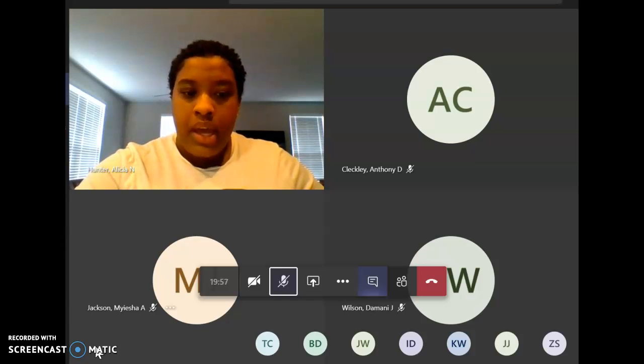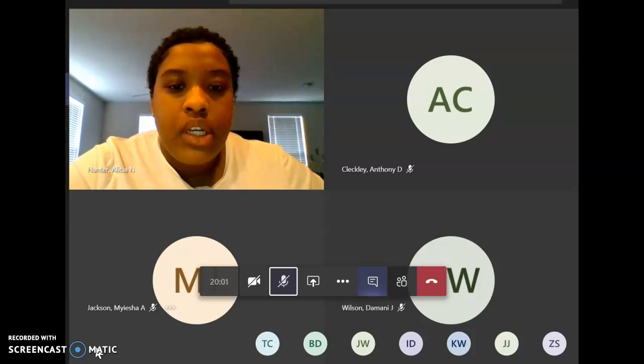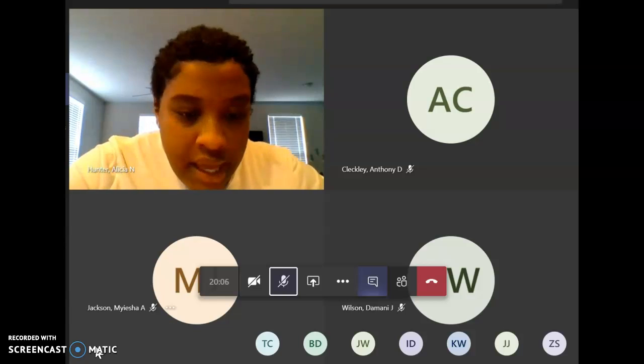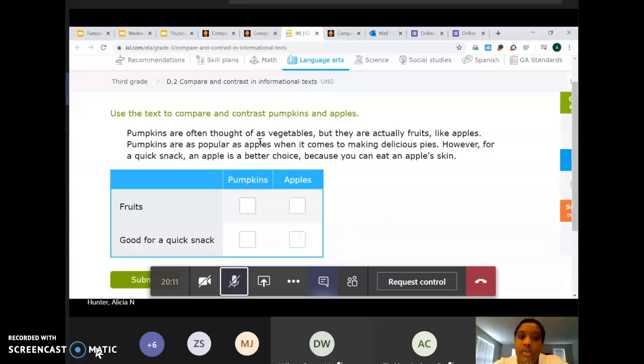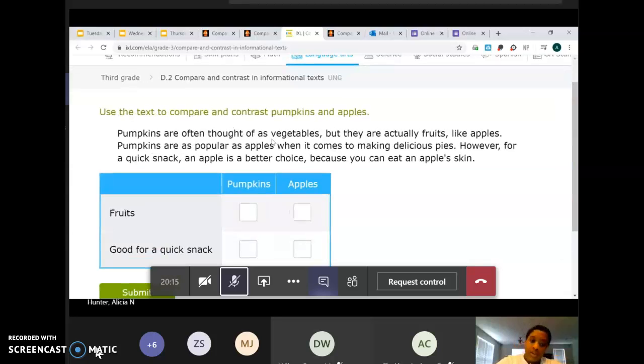And we're going to do a little activity where you're going to read a short passage, and then you're going to compare and contrast the information in the passage. So this is how we're going to do it. Just like in social studies when you guys put the waving emoji if you have an answer. If you have an answer, you're going to put the waving emoji and then I'm going to call on you and you can unmute yourself and tell me the answer. Okay? So use the text to compare and contrast pumpkins and apples. Pumpkins are often thought of as vegetables, but they are actually fruits, like apples. Pumpkins are as popular as apples when it comes to making delicious pies. However, for a quick snack, an apple is a better choice because you can eat an apple's skin. So, fruits. Are pumpkins a fruit, apples a fruit, or both? If you have an answer, put the waving emoji so I can call on you.